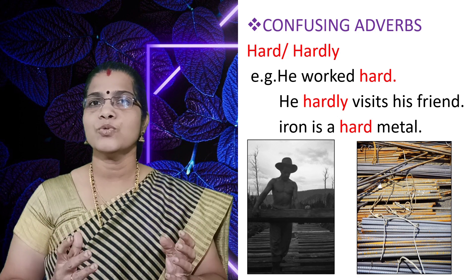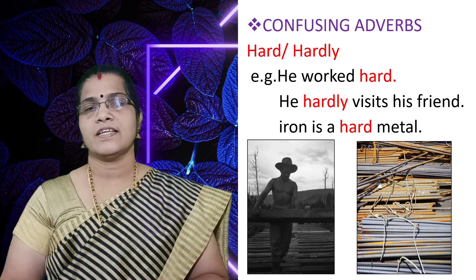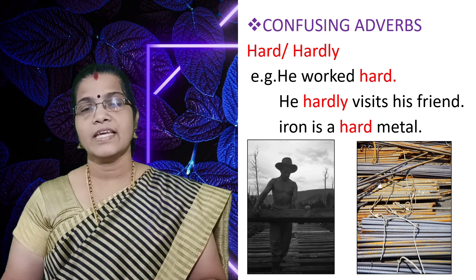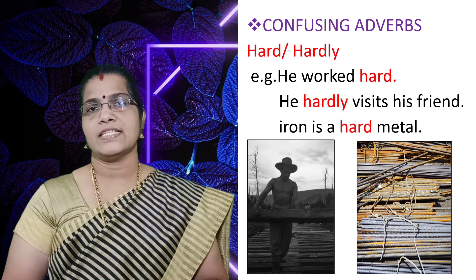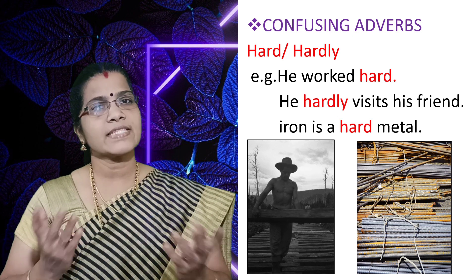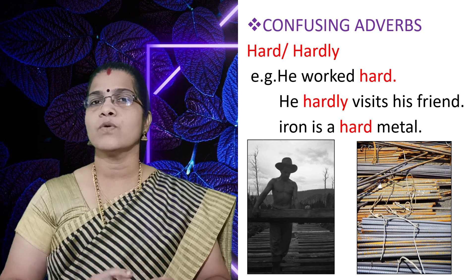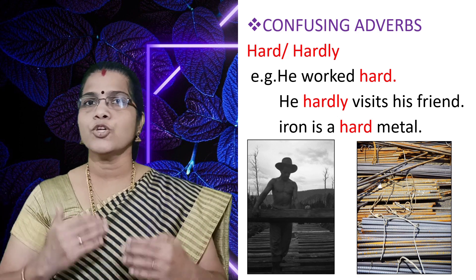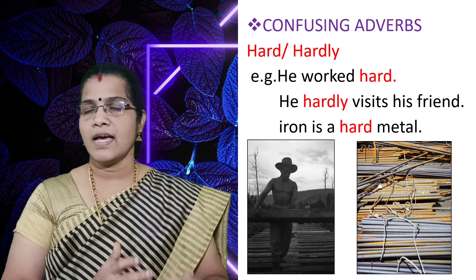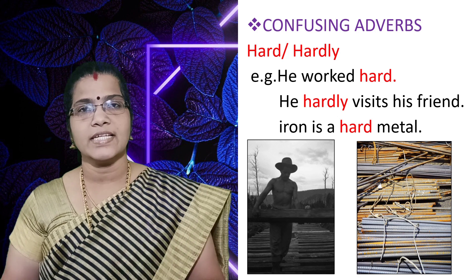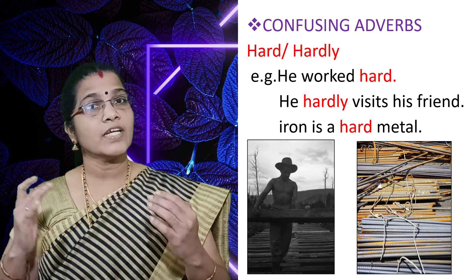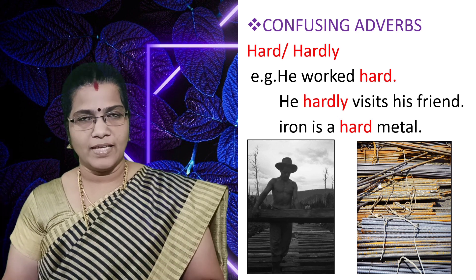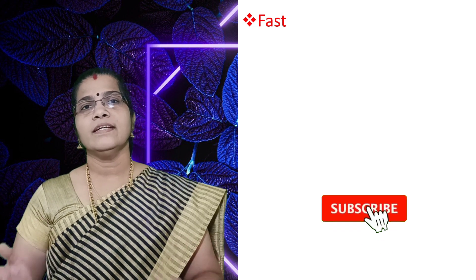Hard is used as an adverb in the first sentence — you cannot use hardly there. The word hardly means scarcely; it gives a negative meaning to the sentence — it means scarcely or no. It doesn't mean 'with much effort.' He works hard means he works with much effort, and there you cannot use hardly. In the last sentence, hard is used as an adjective: iron is a hard metal. What kind of metal? Hard metal — it qualifies the noun metal, so it is an adjective there.